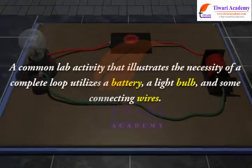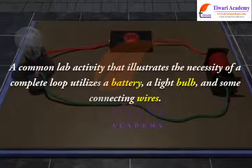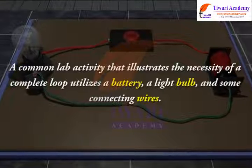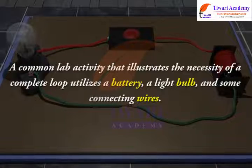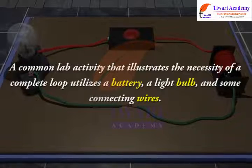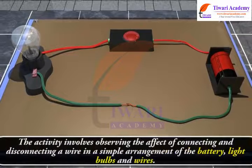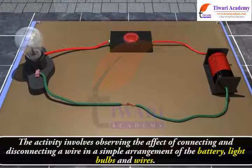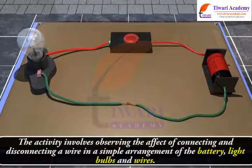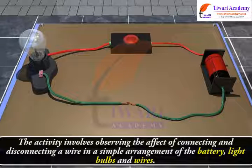A common lab activity that illustrates the necessity of a complete loop utilizes a battery, a light bulb and some connecting wires. The activity involves observing the effect of connecting and disconnecting a wire in a simple arrangement of the battery, light bulbs and wires.